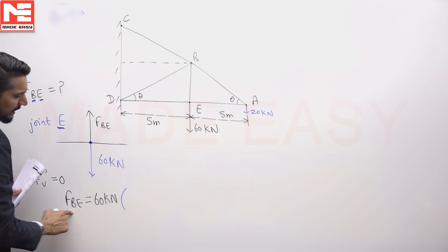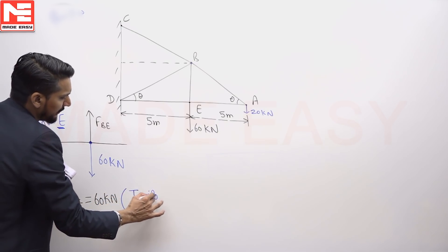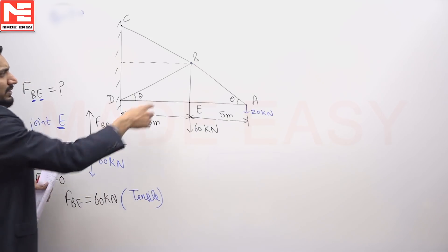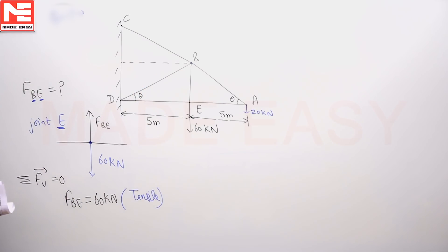Member BE, this force in member BE will be 60 kilo Newton and its nature will be tensile. What is the meaning of tensile? It will create the tension in the member BE. So our member BE is in tension with an intensity of 60 kilo Newton.